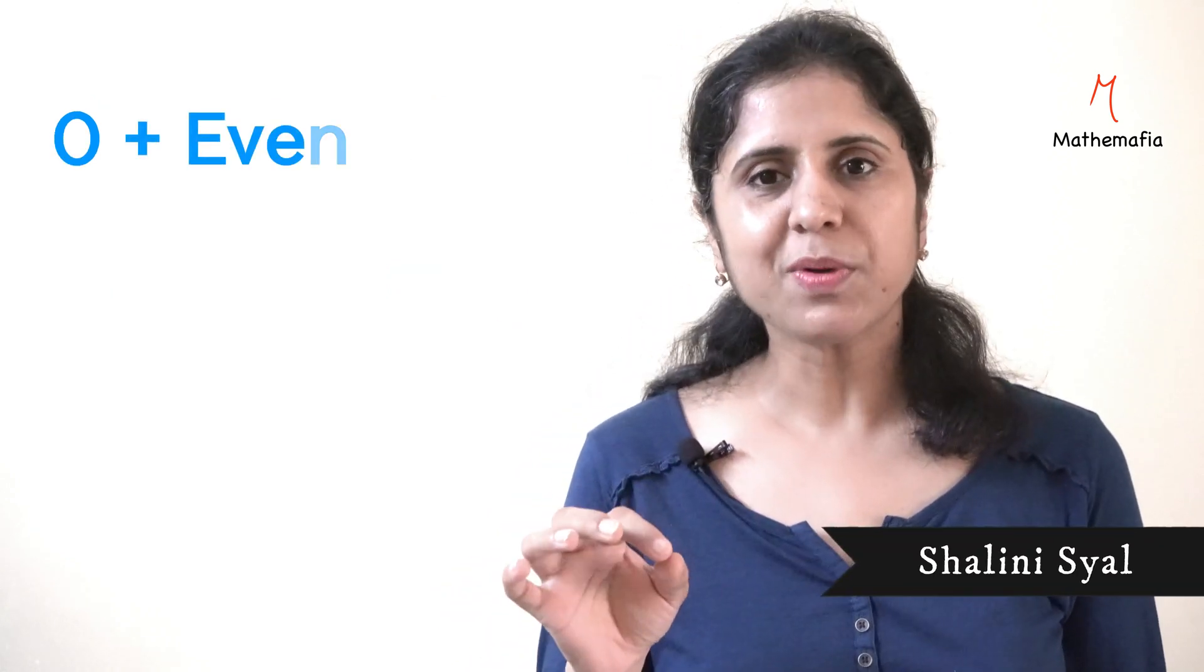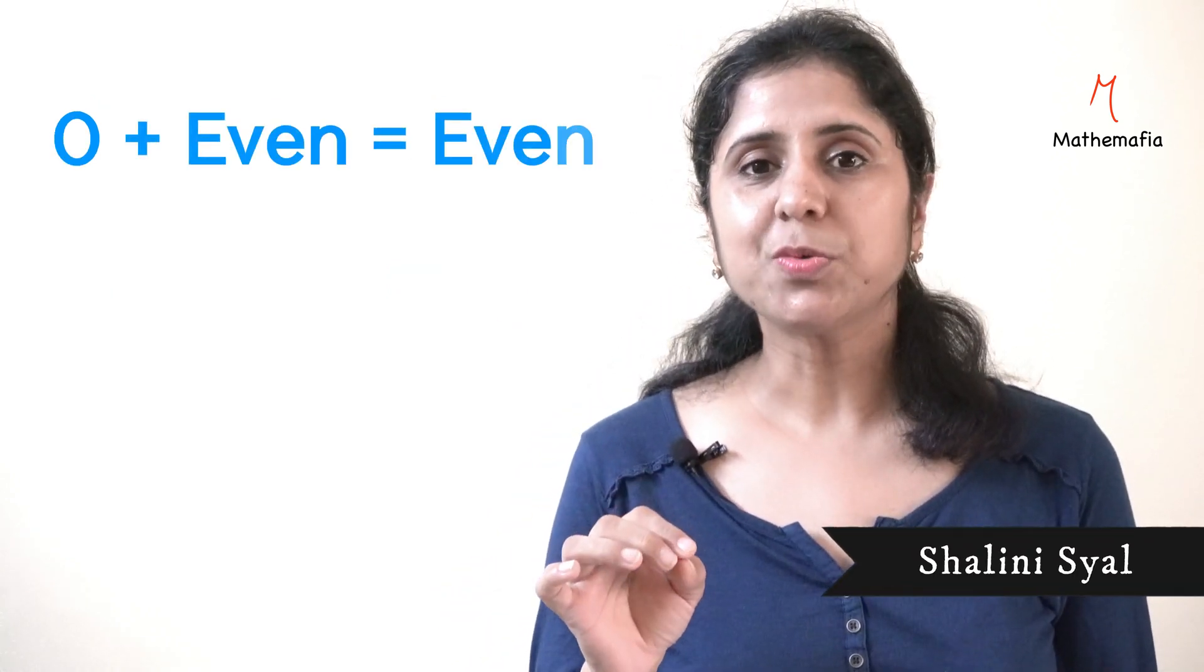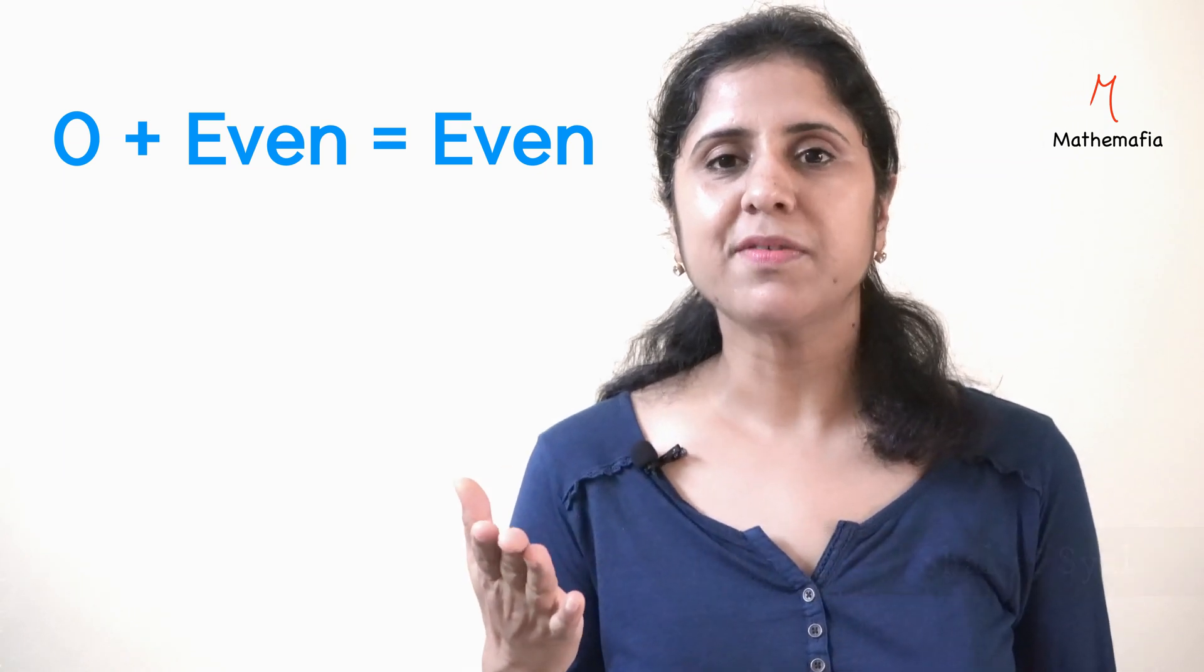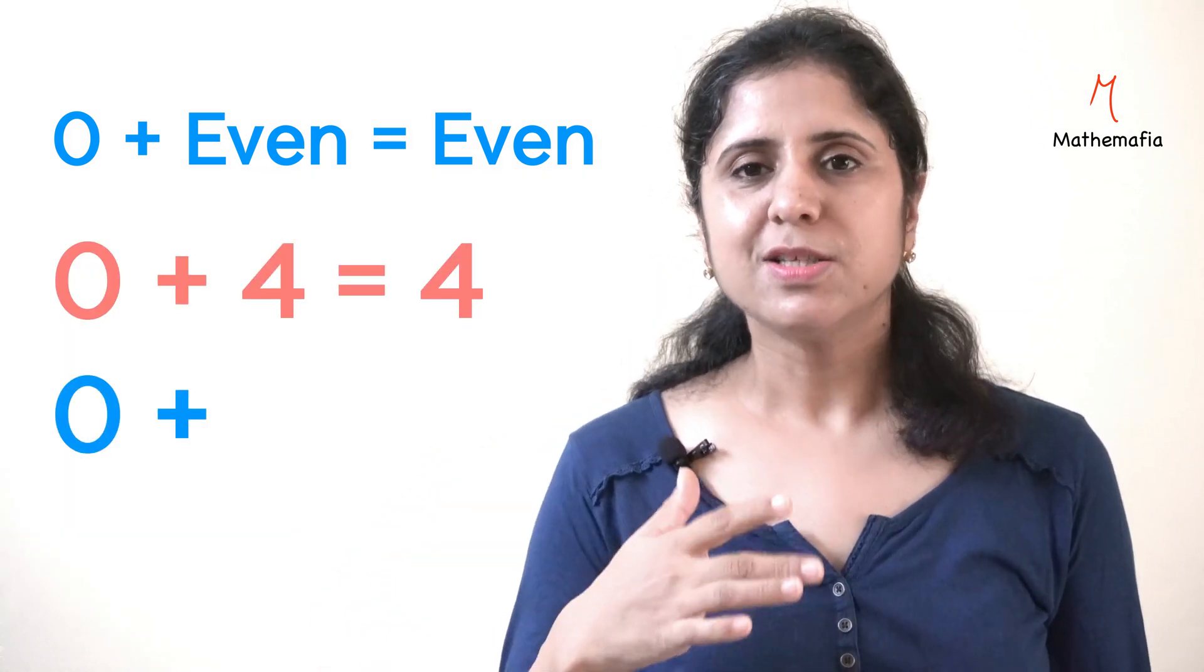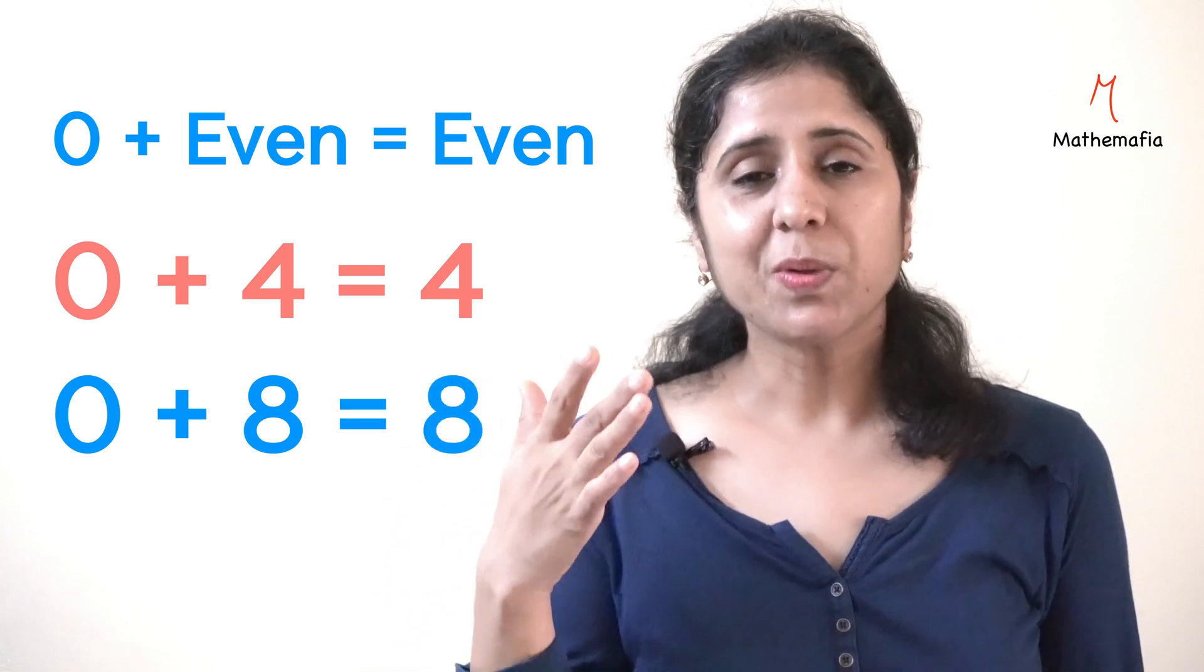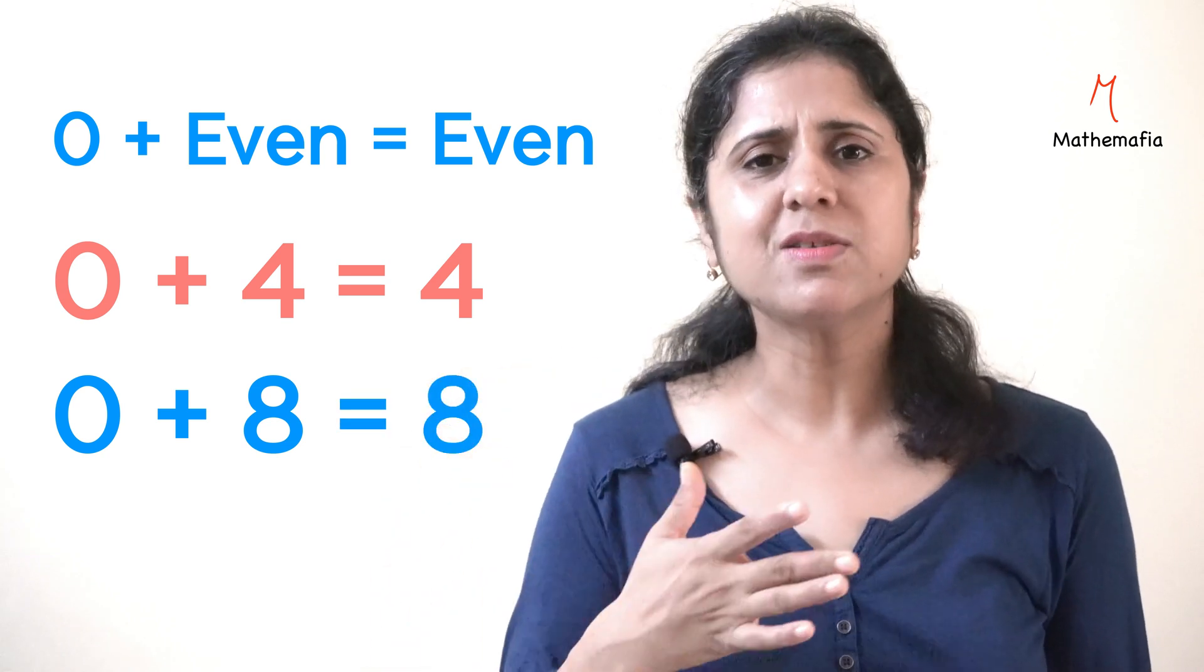Similarly, if we add 0 to an even number, the result is going to be the same even number. For example, 0 plus 4 is 4, 0 plus 8 is 8. So, we get the same even number. So, the result is obviously even.